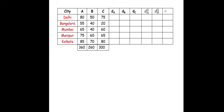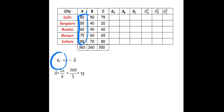dA = A − Ā. To calculate Ā: Ā = summation of A / n. Summation of A is 360, and n is 5 (Delhi, Bangalore, Mumbai, Manipur, Kolkata — 5 observations). So 360 / 5 = 72, meaning Ā = 72. The A values are 80, 55, 65, 75, 85. For calculating dA we subtract each A value by Ā.